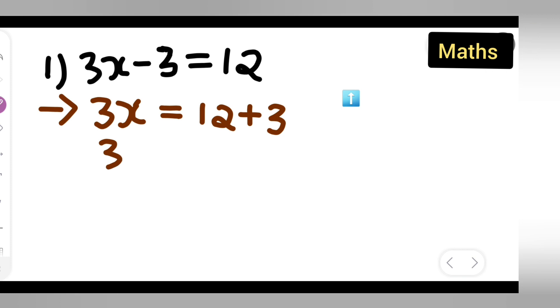Now 3x equals, now add this number, so 12 plus 3 will give you 12, 13, 14, 15. So write down 15.